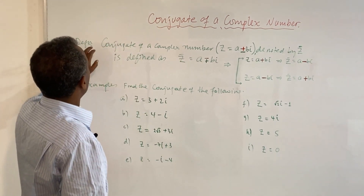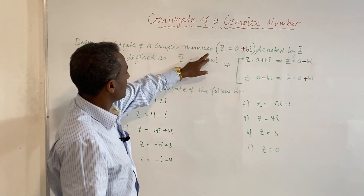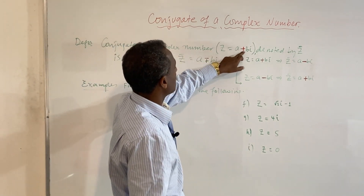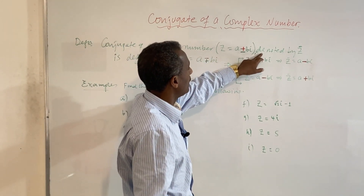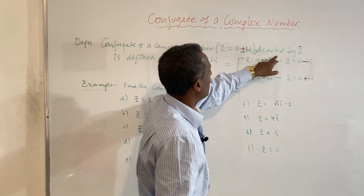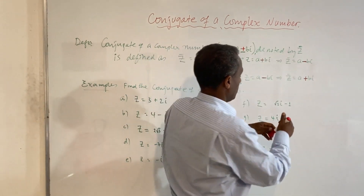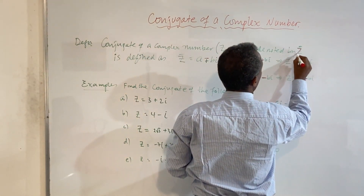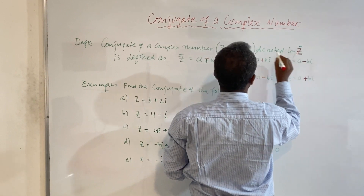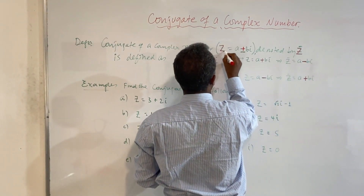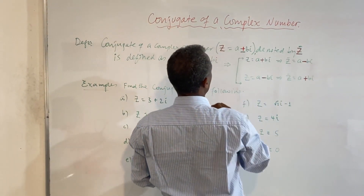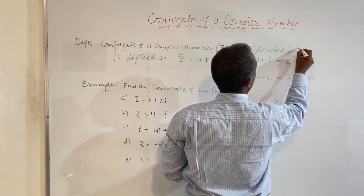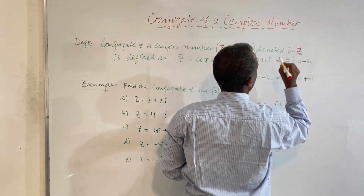Definition: The conjugate of a complex number z, written as a plus bi, is denoted by z-bar. It represents the conjugate of the complex number.